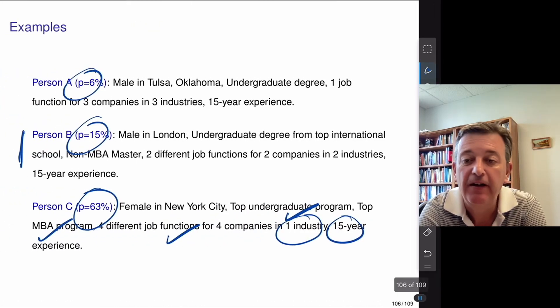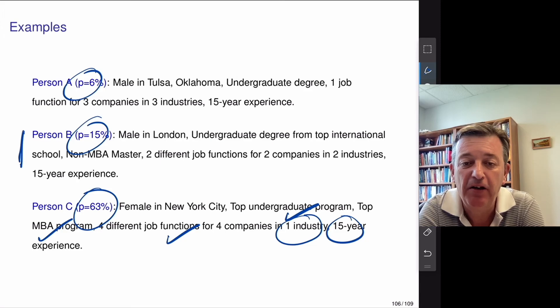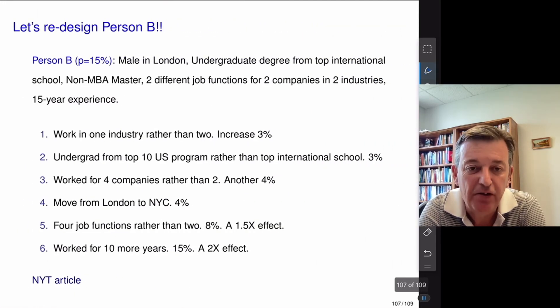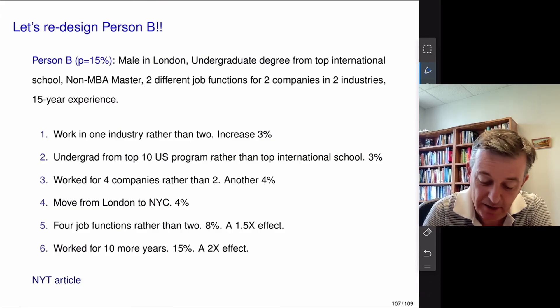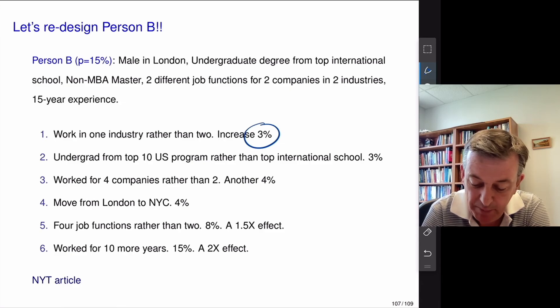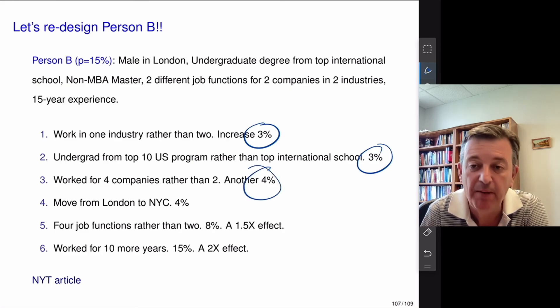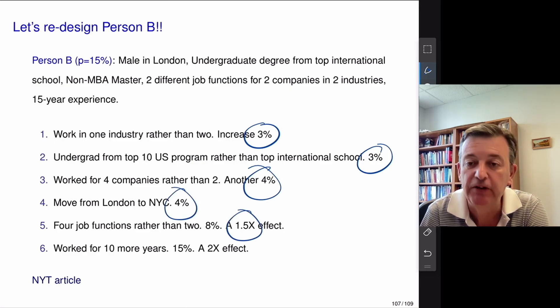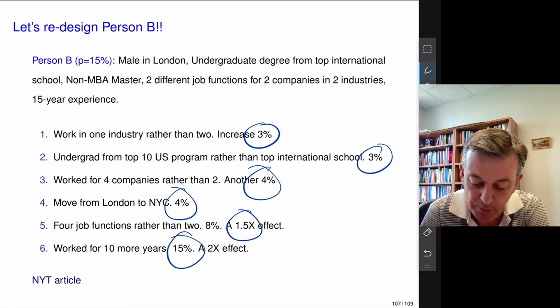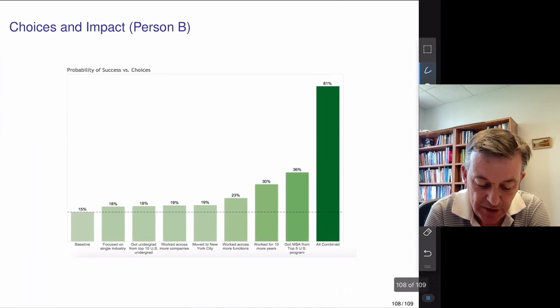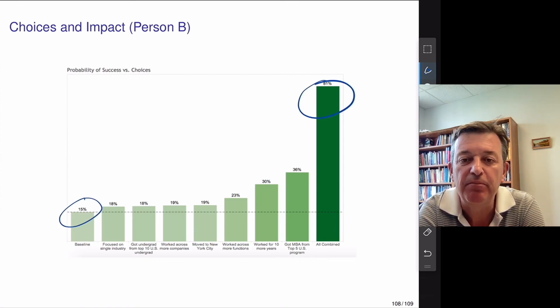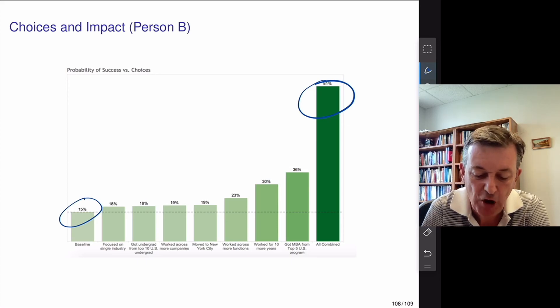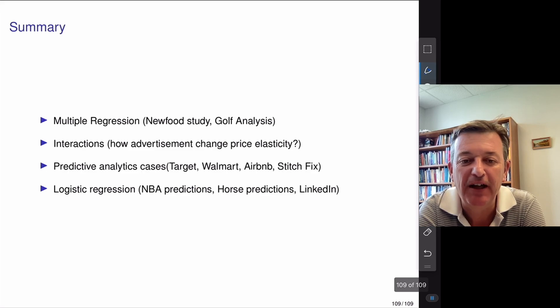Now, you could take this person that went to school in England and you could redesign him or her and try and increase his probabilities. So, maybe they should have worked in one industry rather than two. Maybe they should have come to the US earlier. Maybe they should have worked for a few more companies in the same industry. Maybe should go straight from London to New York. Maybe different job functions do different things in that same industry and maybe work a little bit harder. And so, if you add up all these effects, you can see that the 15% that you started can be increased to a dramatic 80%. And I hope you found that a fun analysis at the end of today of logistic regression.